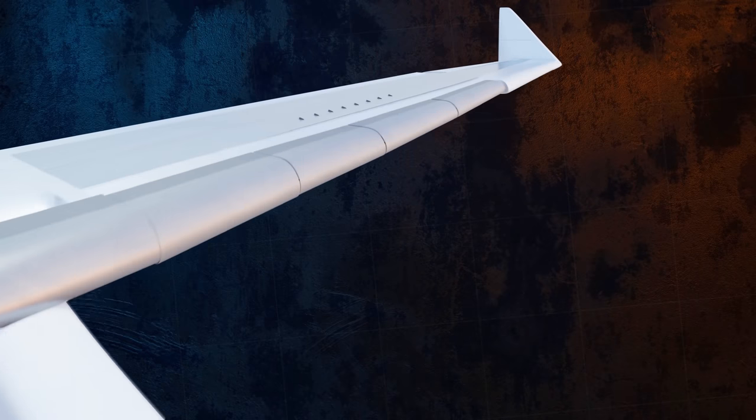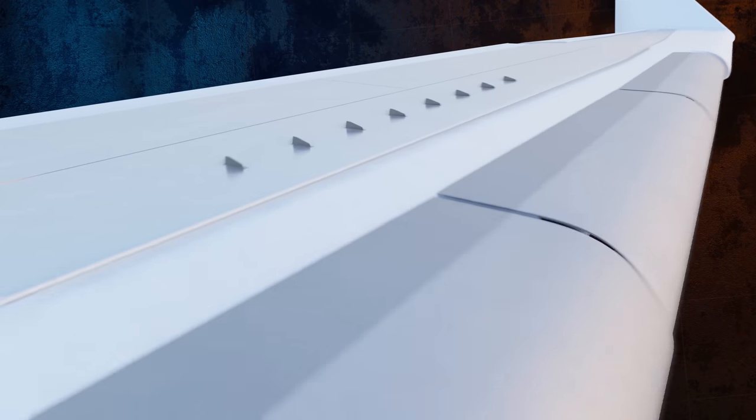This idea of using turbulence to delay flow separation and reduce pressure drag is also why some airplane wings have small vortex generators protruding from them.